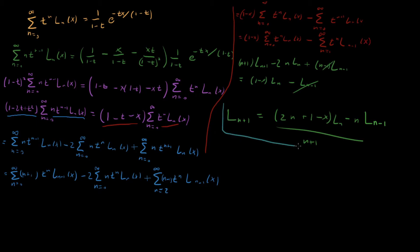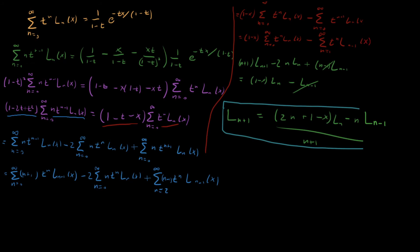It took a bit of work, a bit of toiling with series, but now we have a nice recurrence relationship such that if we know just two terms of our Laguerre polynomial — say the first and second — then by doing basic addition we can generate all the others. In the next video I'll do this same type of thing but take a derivative with respect to x instead of t, and we'll see that gives a recurrence relationship for the derivatives of the Laguerre polynomials.